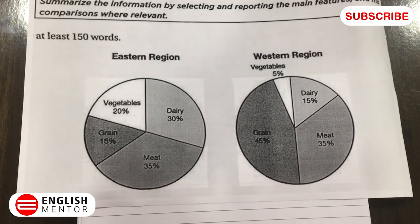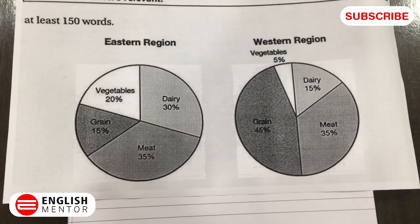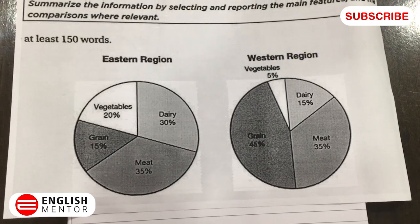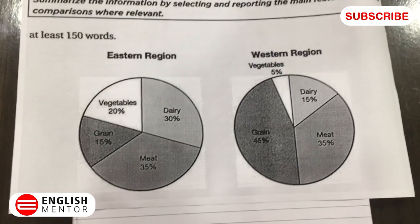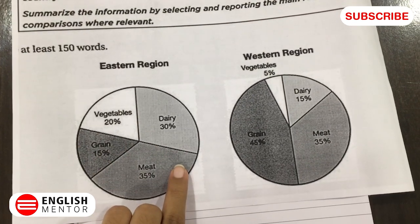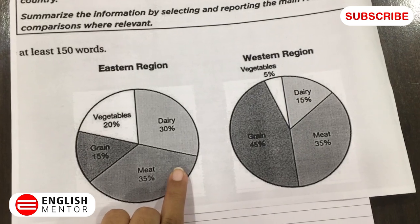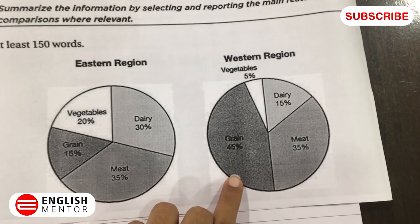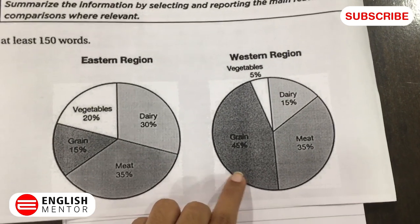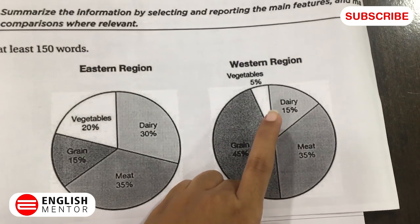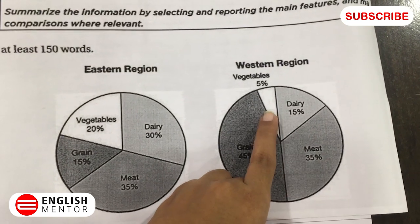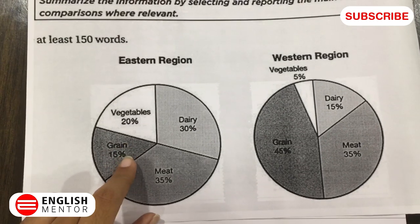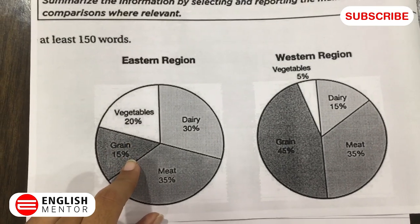Now looking at the pie charts, we can see that one chart covers the eastern region of the country and the other covers the western region. Various food products or agricultural products have been mentioned, and the data given to us is in percentage.